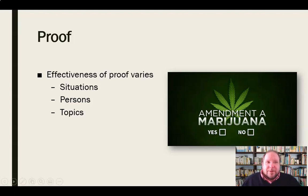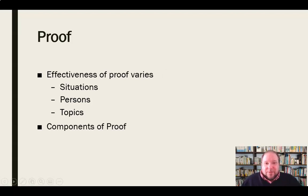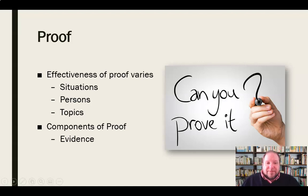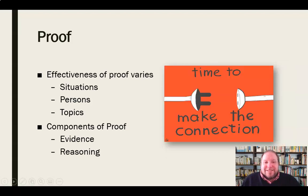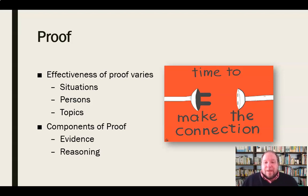The effectiveness of proof is going to vary. We also need to understand that there are different components of proof — two primary components. When we look at logos, logical appeals, and rational appeals for persuasion, there are really two things involved. The first is evidence: can you prove it? Do you have the evidence to back it up? The other is reasoning — can we make that connection between the evidence and what it is we're talking about, and between the evidence and what the audience wants to hear or what they already know? So we need to consider the evidence and the reasoning, and make that connection between those things and the audience.